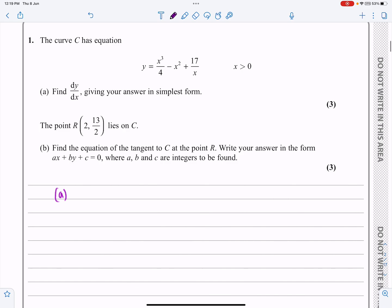So part A says, can we find dy/dx? Yeah, well we can. For y I've got x³/4 - x² + 17/x. I'm just going to change 17 over x and make it 17x⁻¹ so that I can now use my differentiation to find dy/dx.